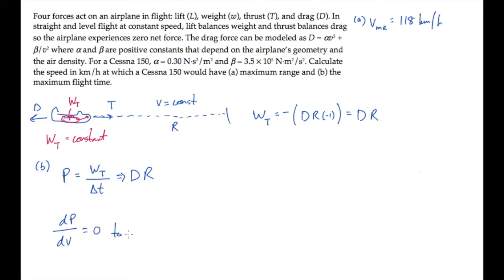That means that we need to set dP dV equal to zero. Substituting in the expression for the drag force, in the maximum range, in simplifying, we get an expression we can divide by delta T to find the power. That's what we need to take the derivative of. That derivative is shown here.